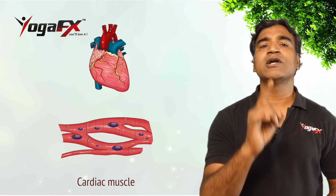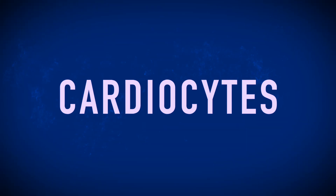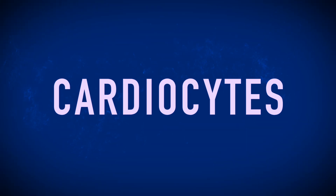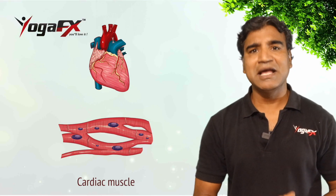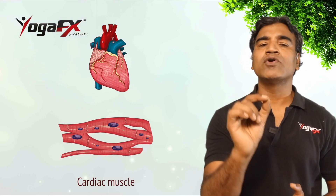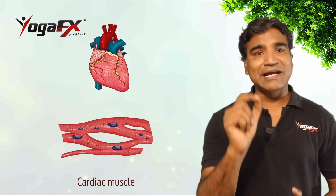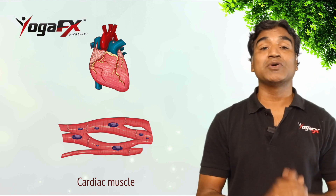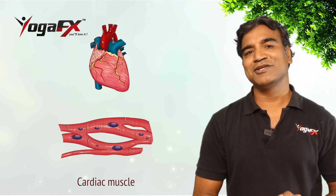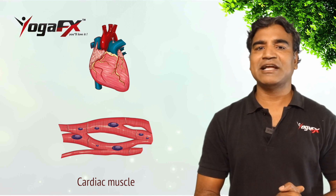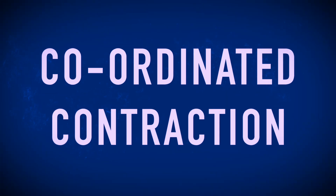Cardiac muscle is made up of cells called cardiocytes. Like skeletal muscle cells, cardiocytes have a striated appearance, but the overall structure is shorter and thicker. Cardiocytes are branched, allowing them to connect with several other cardiocytes, forming a network that facilitates coordinated contraction.